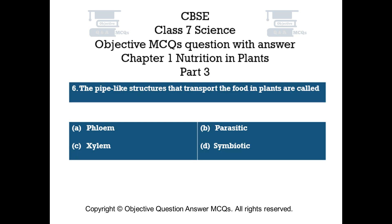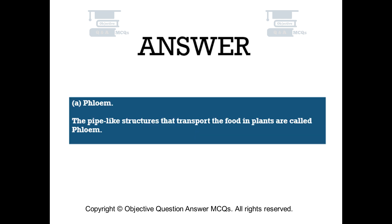Question number 6. The pipe-like structures that transport the food in plants are called. Option A: Phloem. Option B: Parasitic. Option C: Xylem. Option D: Symbiotic. The right answer is option A: Phloem. The pipe-like structures that transport the food in plants are called phloem.